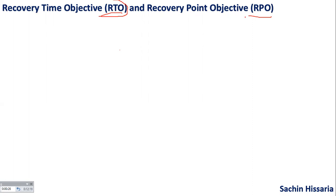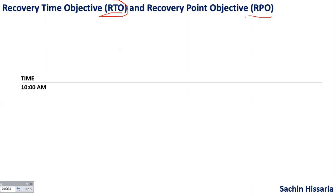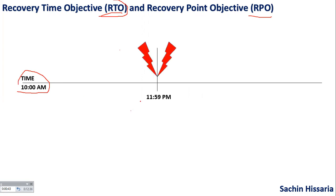First, I will explain the concept of RTO and RPO with an example, and then we will see the theory part. Suppose the current time is 10 a.m. At 11:59, there is some disaster which has impacted your business. And as part of your process, you are taking backup on a regular one-hour basis.